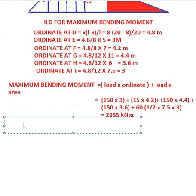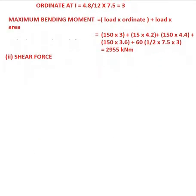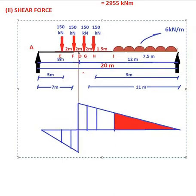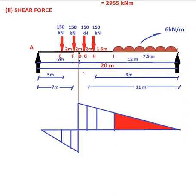Now for the second part, we have to find the shear force at this section. First we draw the influence line diagram for the shear force, considering both the positive and negative cases. We find the values of the ordinate at D for the maximum positive and maximum negative cases, and then the ordinates at E, F, G, H, and I.